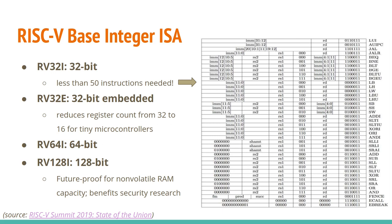There are four base integer instruction sets. The first is RV32I which is 32-bit and has less than 50 instructions — much smaller than x86 or ARMv8. There's also an embedded variant with a smaller number of registers to save on resources. The more common one will be RV64I which is 64-bit integer. There's even 128-bit, which might seem silly, but the experience of the designers was that you can never have enough address space. With non-volatile RAM capacities increasing we may need that sooner rather than later, and it's also beneficial for security reasons.